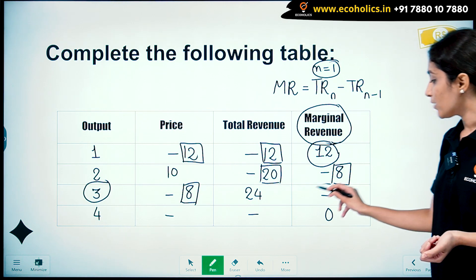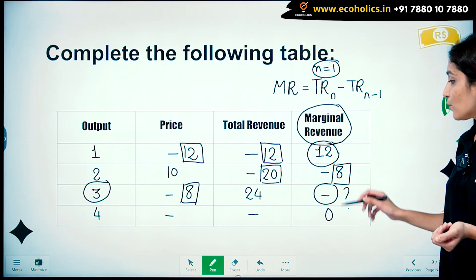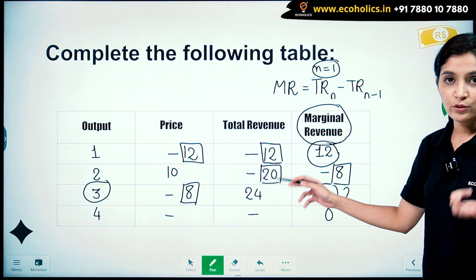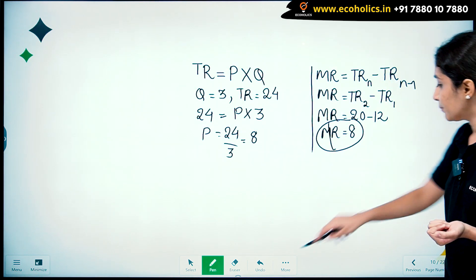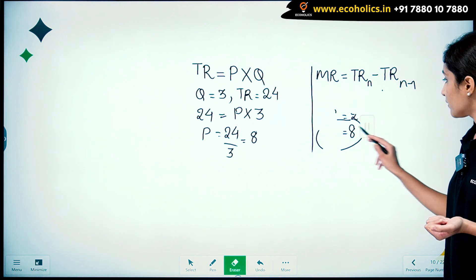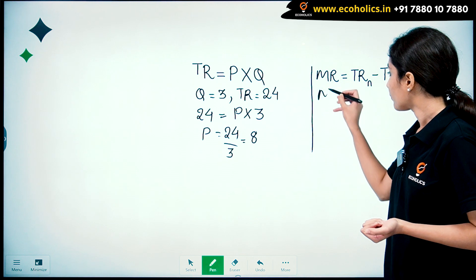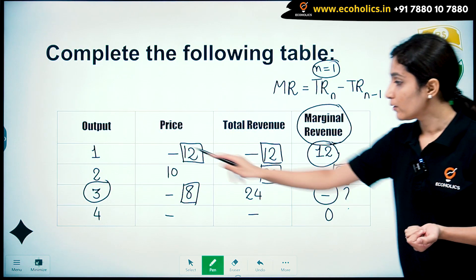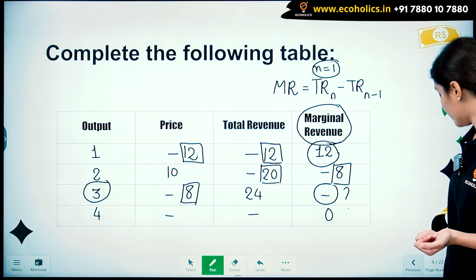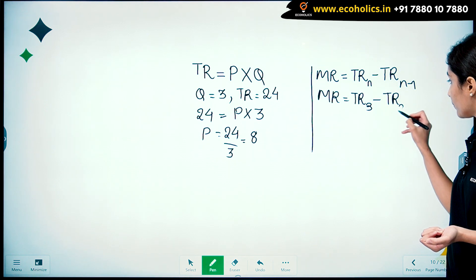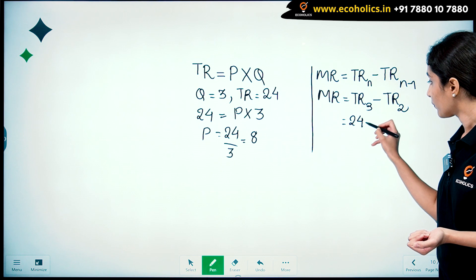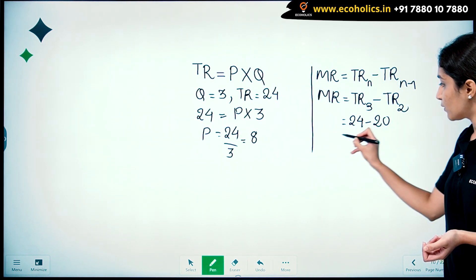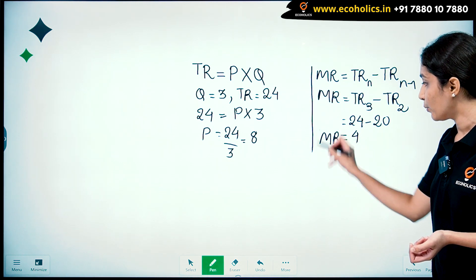Now finding marginal revenue for the third case. Total revenue for 3 units is 24 and total revenue for 2 units is 20, so marginal revenue = 24 − 20 = 4.